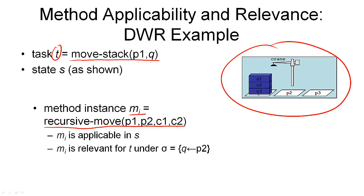To check for applicability, we need to examine the preconditions of this method. And if you remember, there were two positive preconditions associated with this, namely instantiated that the container c1 must be the top of the origin pile. And we can see in the state here, c1 is the top of the origin pile, so that precondition is satisfied.